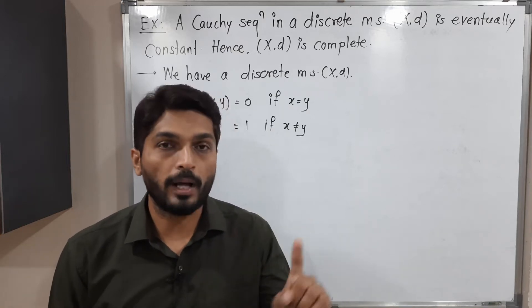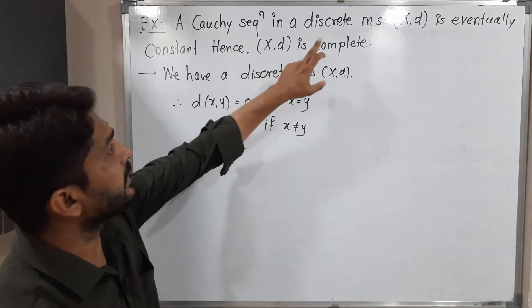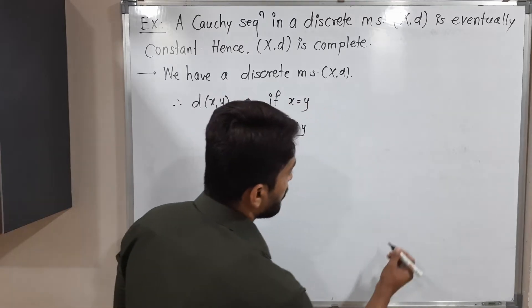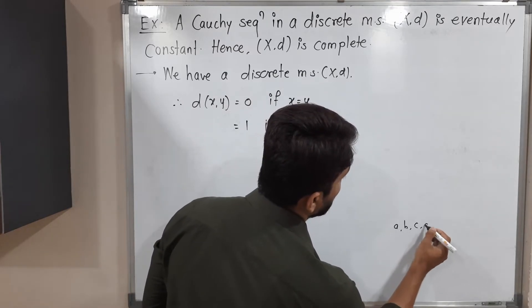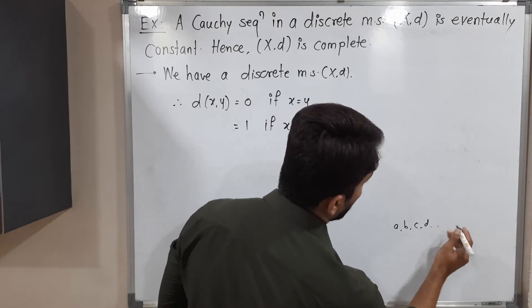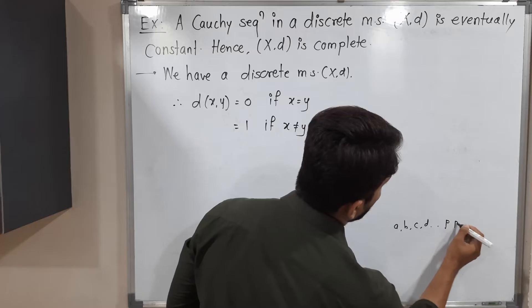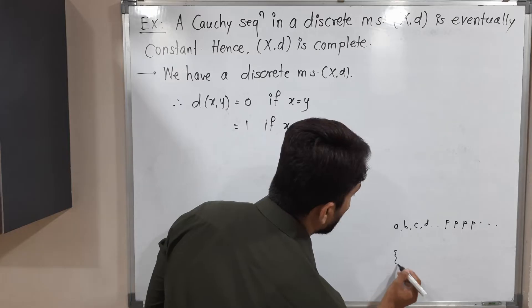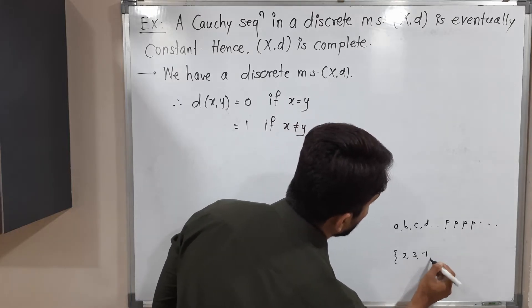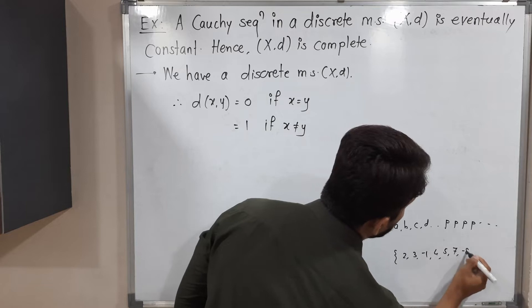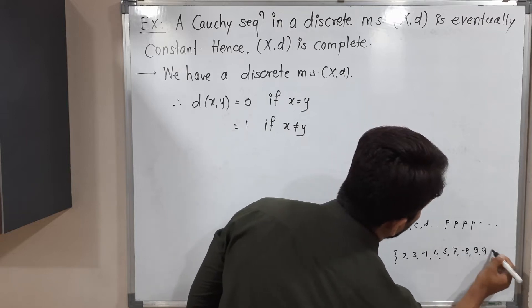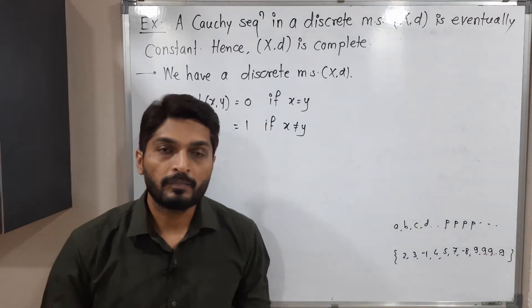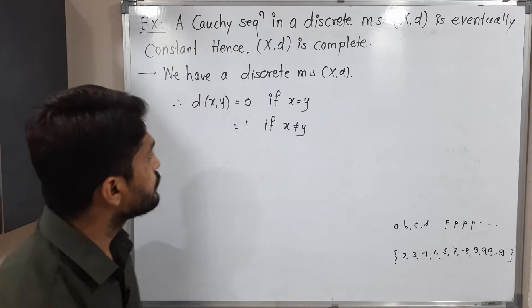We have to prove every Cauchy sequence is eventually constant. Eventually constant means a sequence whose first terms are different — a, b, c, d, whatever — and after some finite number of terms you will have just p, p, p, p — all terms are the same. For example with real numbers: 2, 3, −1, 4, 5, −8, and after that all remaining terms are the same: 9, 9, 9, 9... So that is an eventually constant sequence.